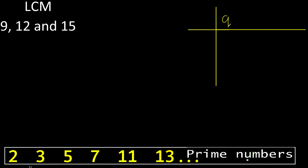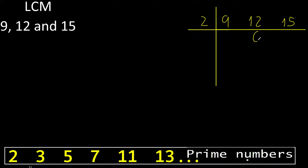Can 9, 12, or 15 be divided by 2? Yes. 12 can be divided by 2. 12 divided by 2 is 6. 9 cannot be divided by 2, therefore equal. 10 cannot be divided by 2, therefore equal.